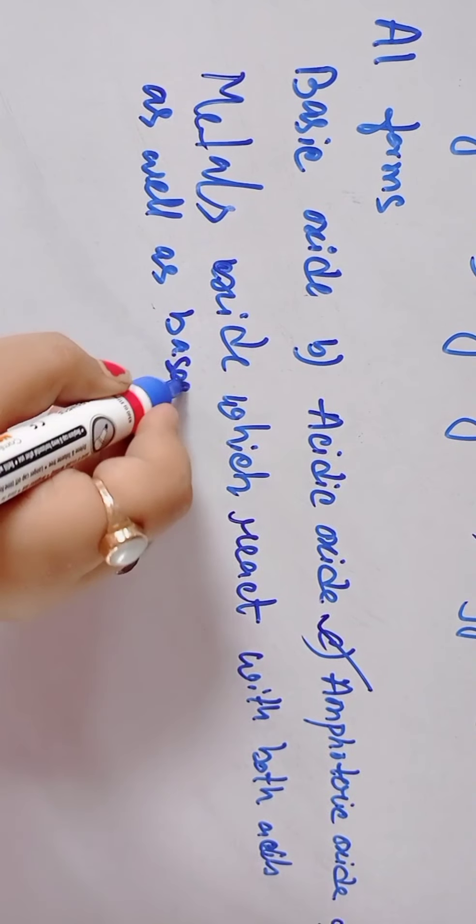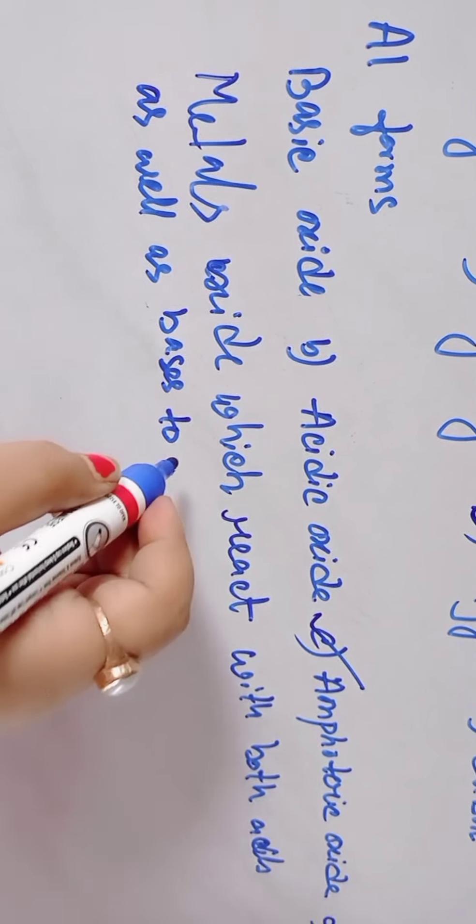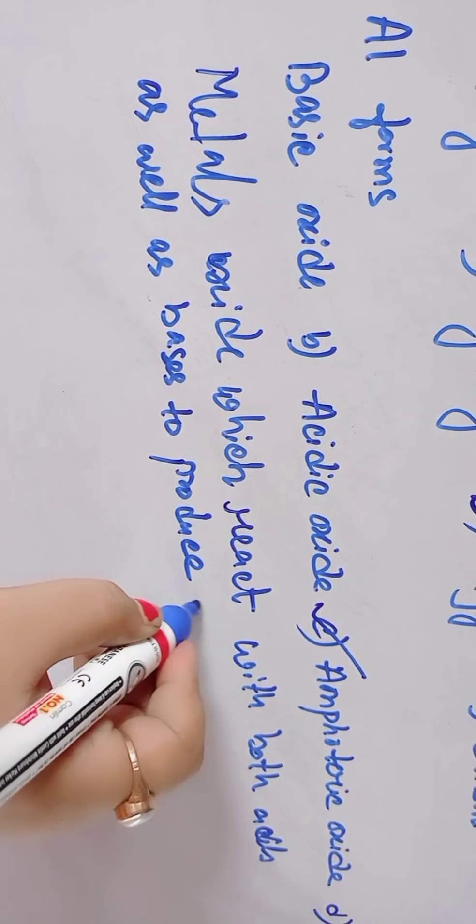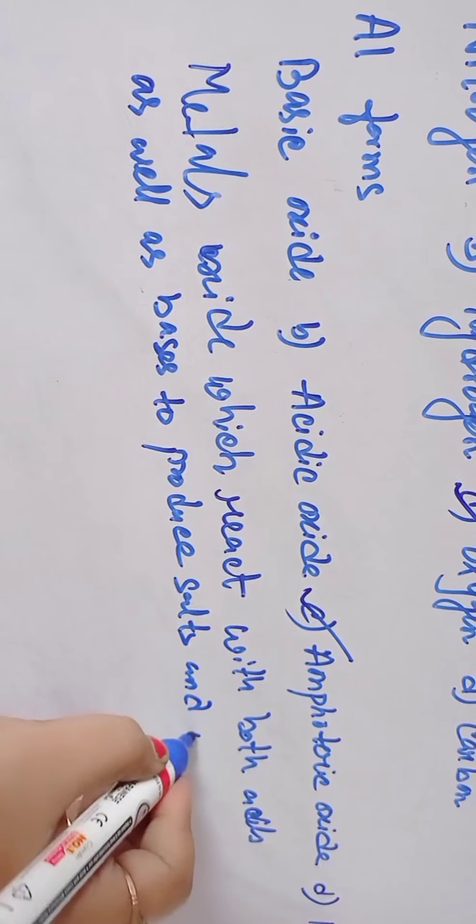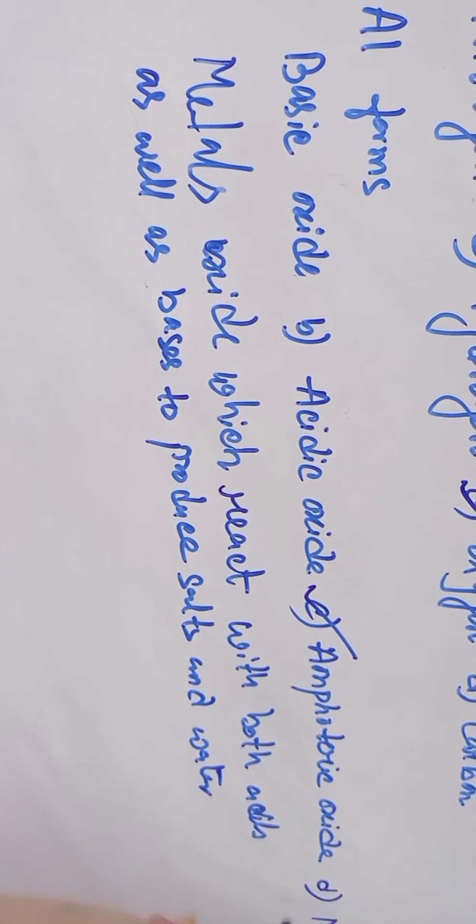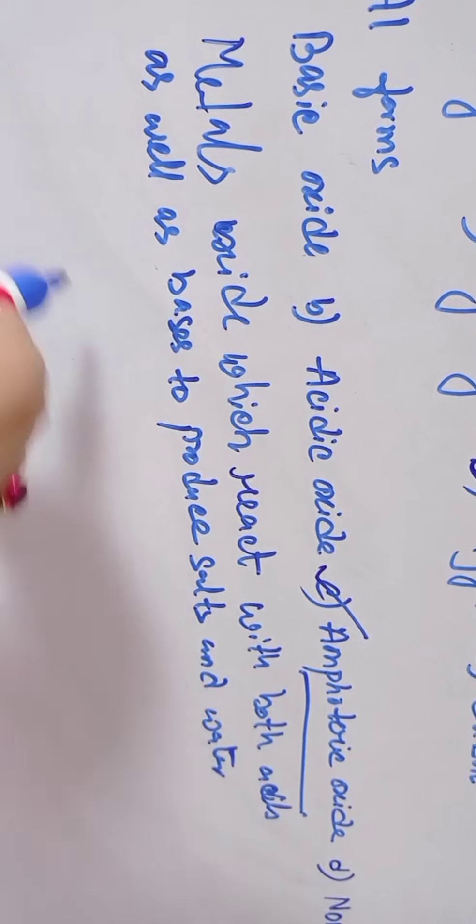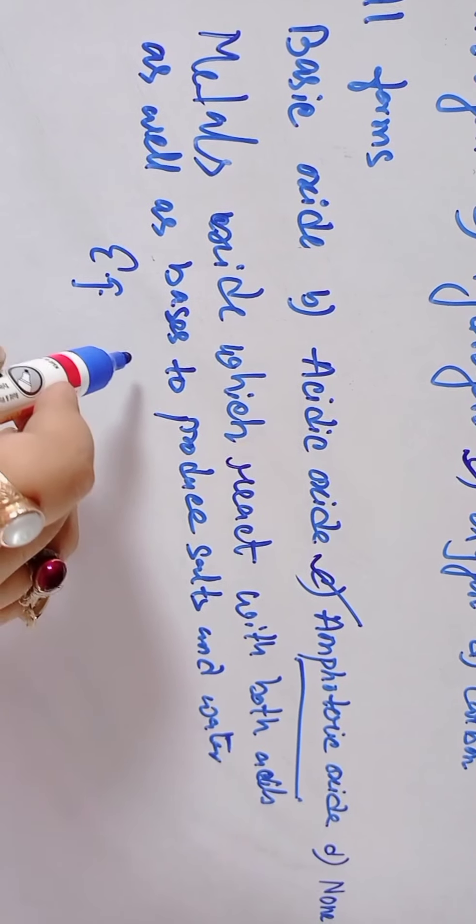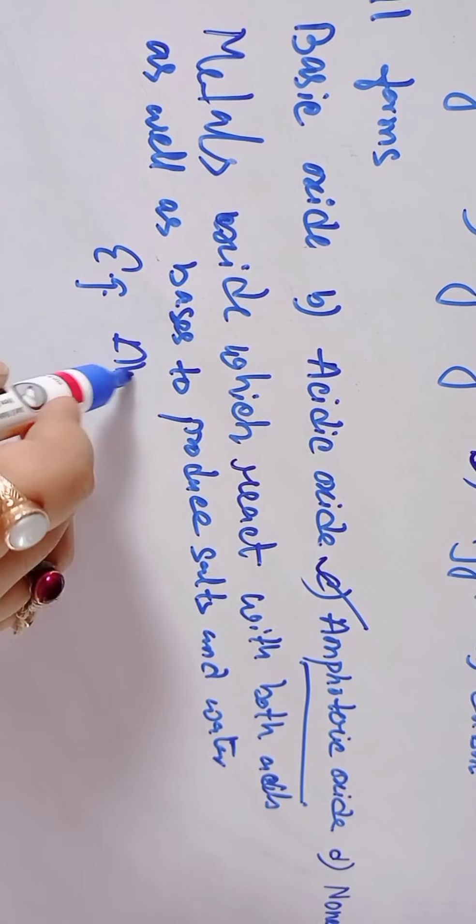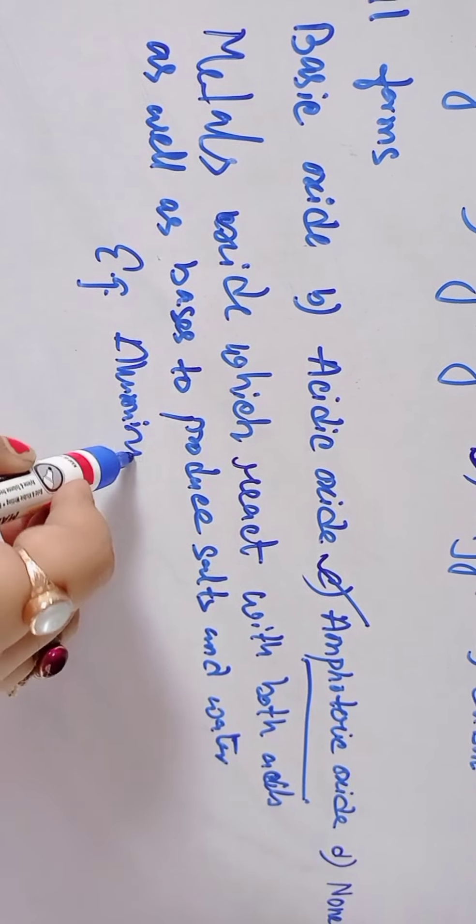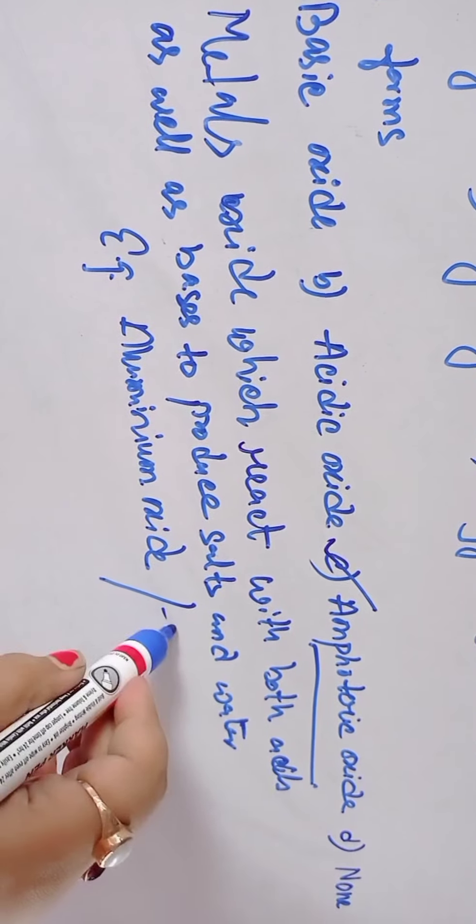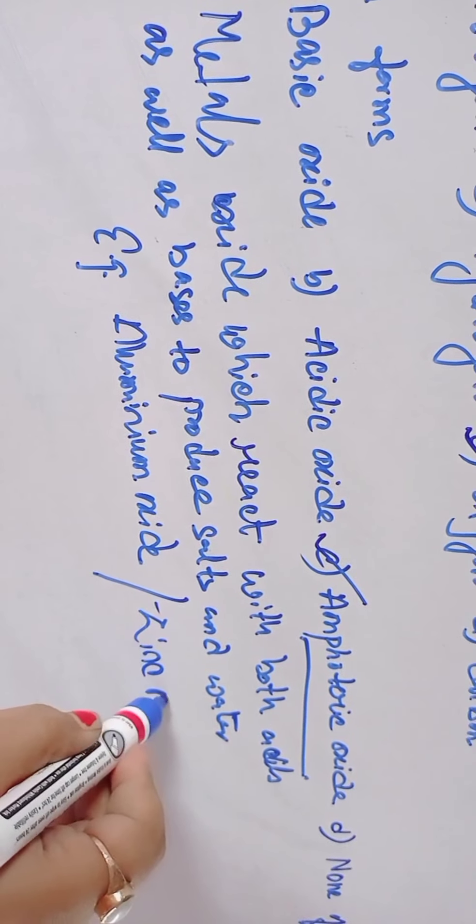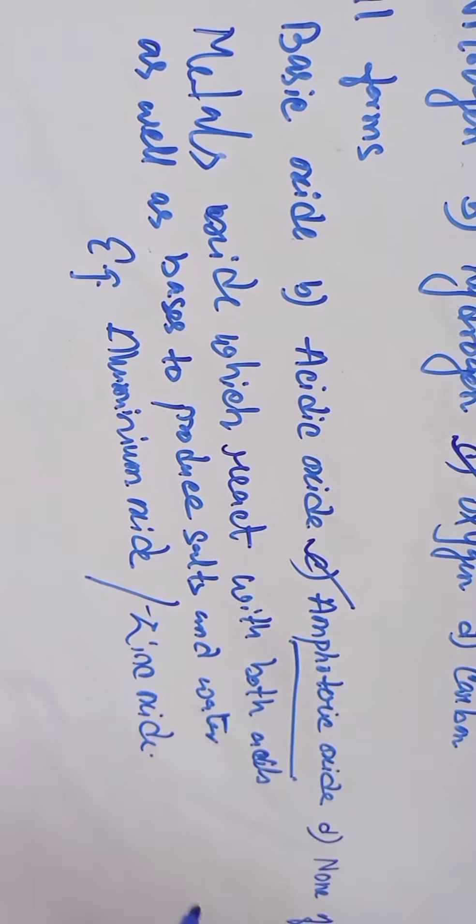Amphoteric oxide means metal oxide which reacts with both acids as well as bases to produce salt and water. Known as amphoteric oxide. For example, aluminium oxide or zinc oxide.